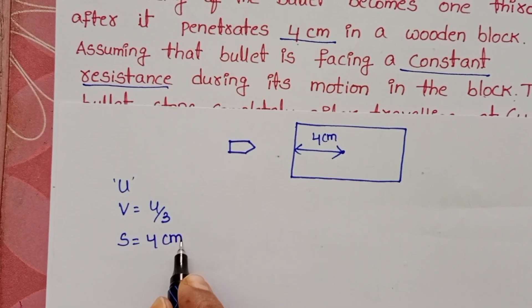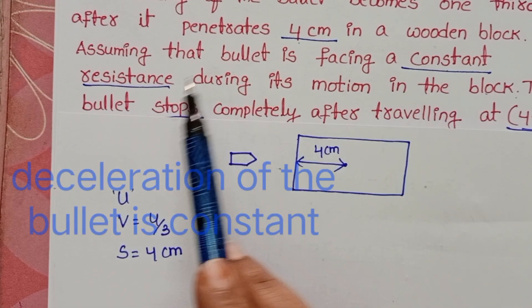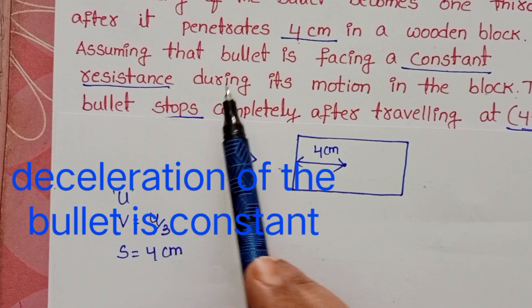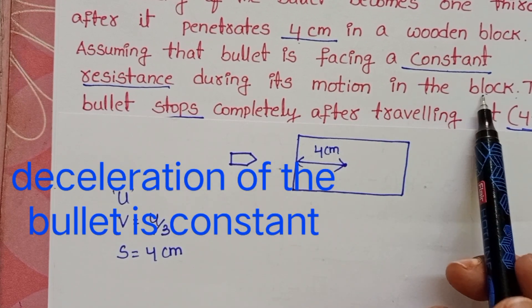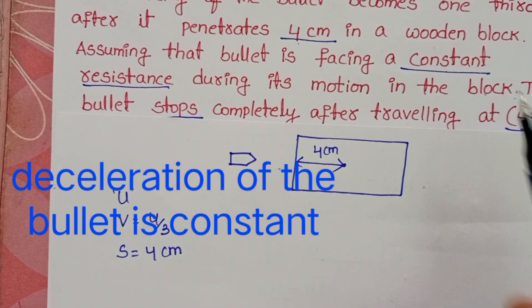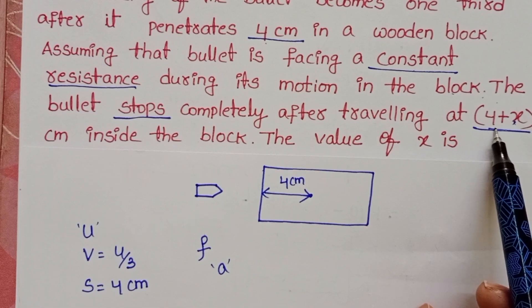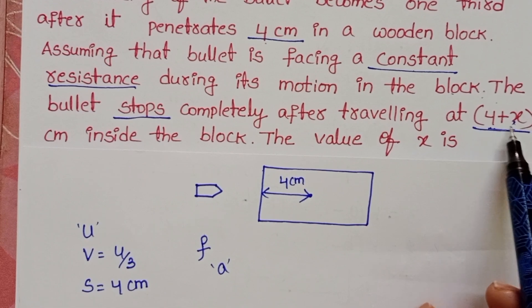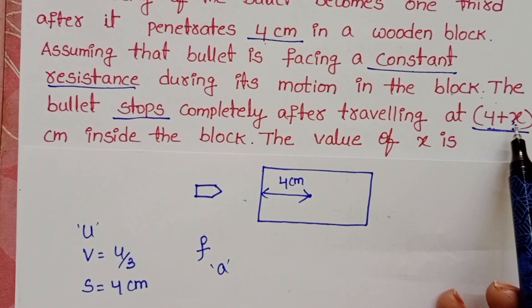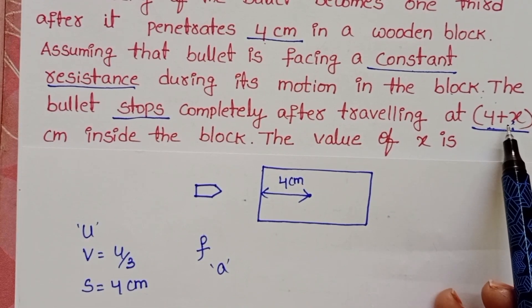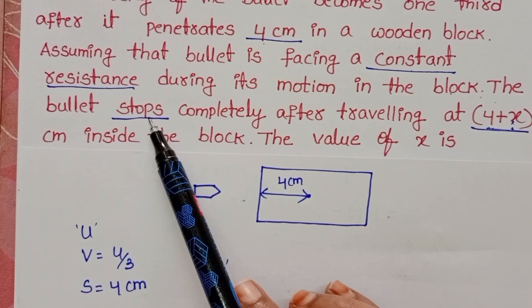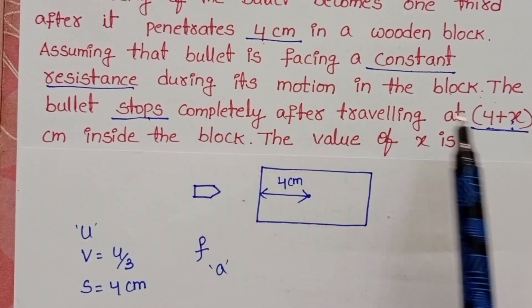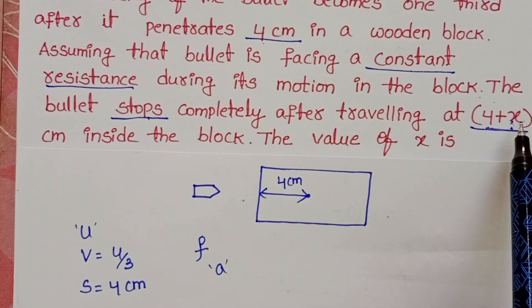A constant resistance is acting on the bullet whenever it is travelling through the block. The total distance travelled by the bullet is (4 + X). After travelling this distance, the bullet comes to rest. Using this information, we have to find out the value of X.